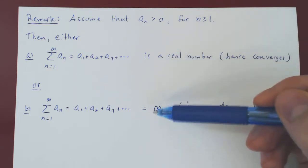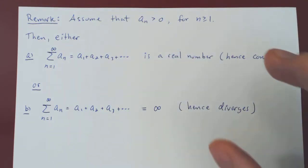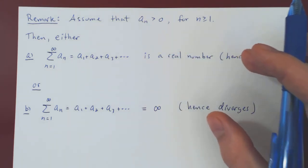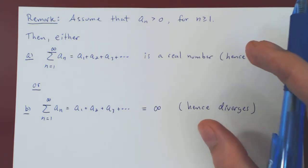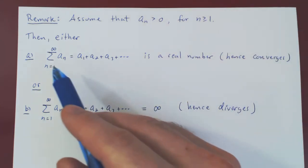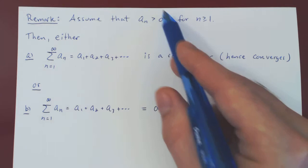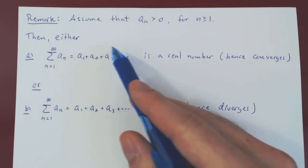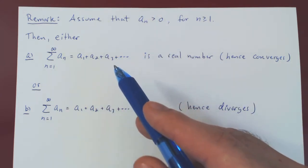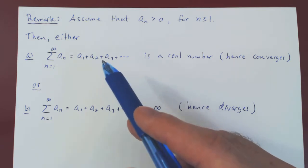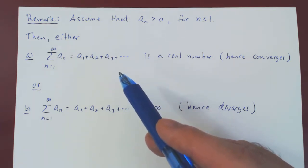And this is really it. So here's what you should keep from this discussion. This is the most intuitive version of this statement. When you have a series of positive terms, as you're adding more and more terms, the expression becomes larger and larger. And there are only two possibilities.